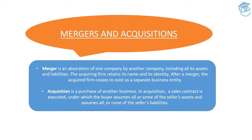The acquiring firm — the one which is going to be acquiring the other company — retains its name and its identity. After a merger, the acquired firm basically disappears; it ceases to exist as a separate business entity and they merge into one another. But if I compare merger with acquisition: in acquisition, it is a purchase of another business altogether. A sale contract is executed completely under which the buyer assumes all or some of the seller's assets and some or all of its liabilities.